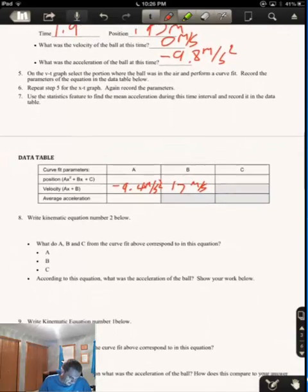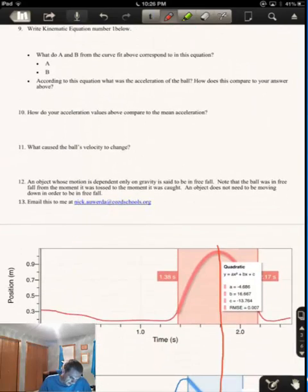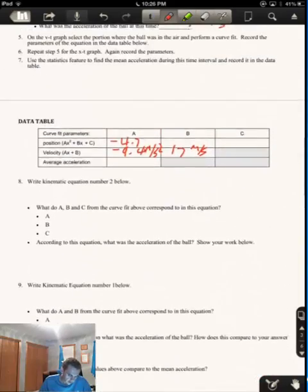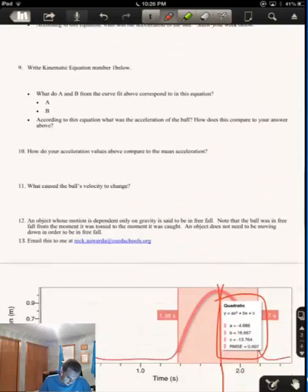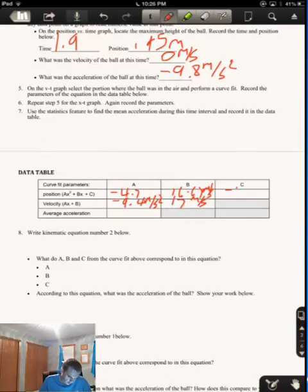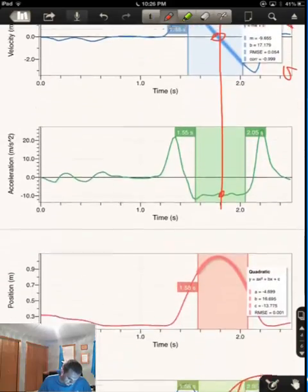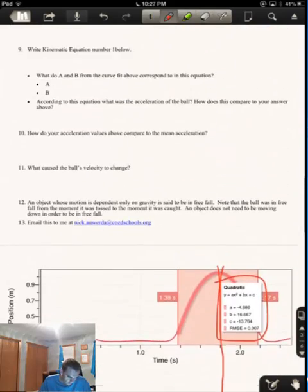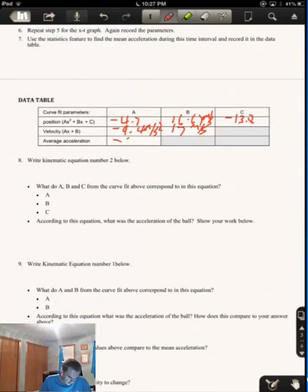Then, repeat step 5 for the X-T graph. So I've got this information. A is negative 4.7. Close enough. Negative 4.7. B is 16.67. 16.67 meters per second. And C is negative 13.764. So negative 13.8. And then the average acceleration, if we come and look at our statistics, says the mean was negative 9.6. So negative 9.6.